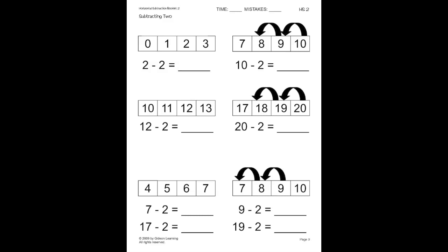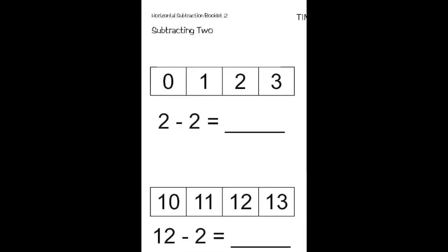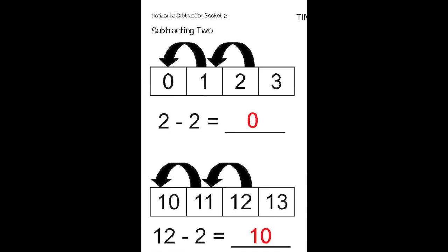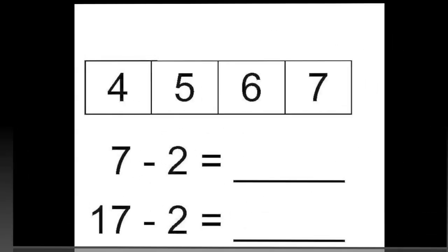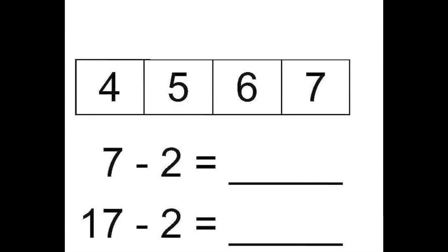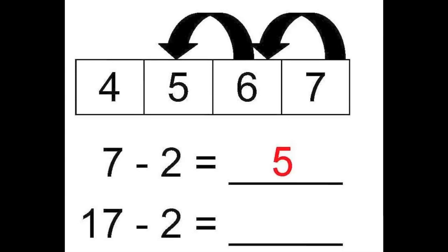Now let's practice subtracting with double digit numbers on page 9. First, we have 2 minus 2, which equals 0. Beneath that, we have 12 minus 2. Notice that 12 is 10 more than 2. So, 12 minus 2 is 10 more than 2 minus 2. So, 12 minus 2 equals 10, which is 10 more than 0. Now let's look at the bottom of the same page. First, we have 7 minus 2, which equals 5. Beneath that, we have 17 minus 2, which is 10 more than 7 minus 2. So, 17 minus 2 equals 15, which is 10 more than 5.